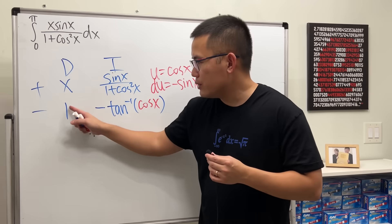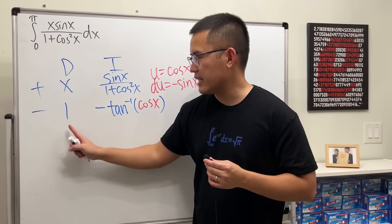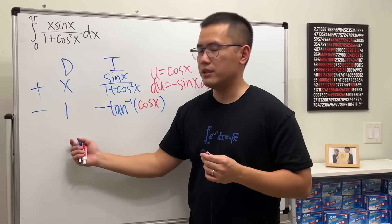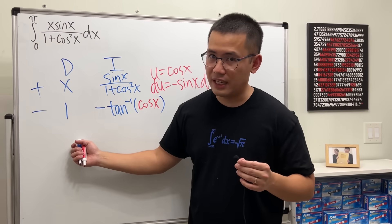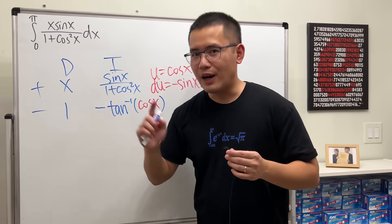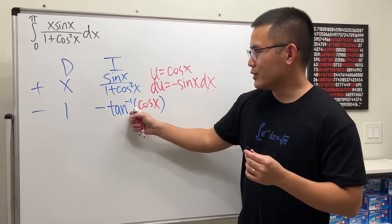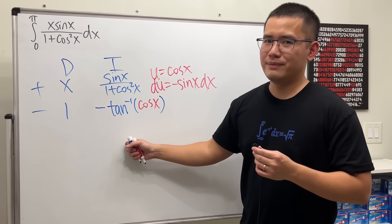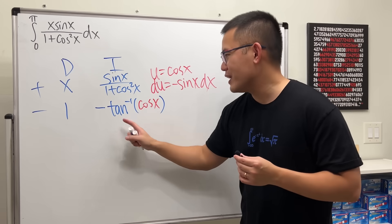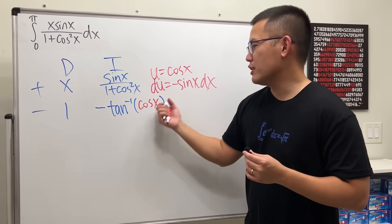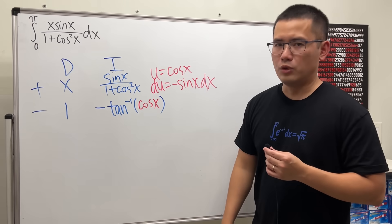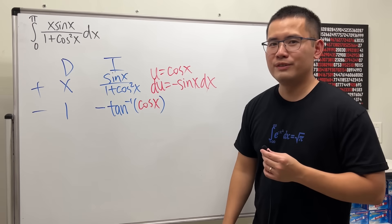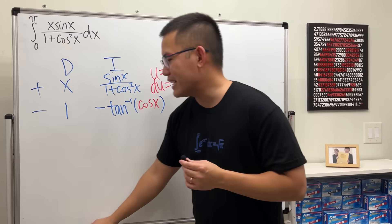You could try differentiating again to get zero in the D column, which is nice. However, you still have to integrate arctan(cos x) — can we integrate arctan(cos x) in closed form? Don't do that.